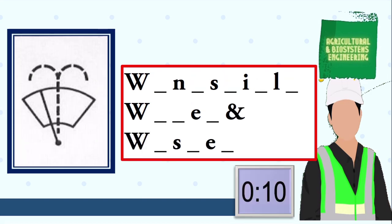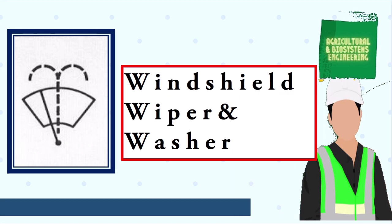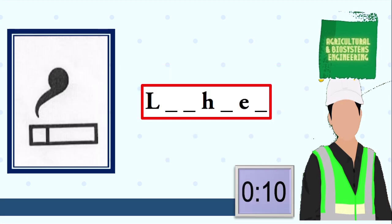Next symbol, your 10 seconds starts now. The answer is windshield wiper and washer. Next symbol, your 10 seconds starts now. The answer is lighter. Next symbol, your 10 seconds starts now.